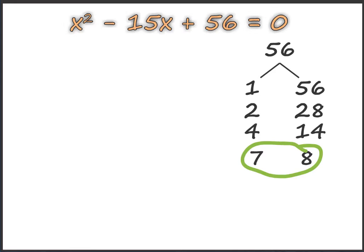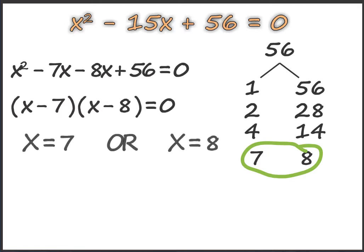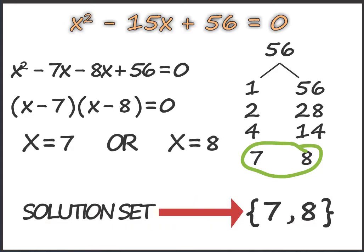We take 7 and 8, because when you add minus 7 and minus 8 we get minus 15. Therefore x minus 7 into x minus 8 equals 0, giving x equals positive 7 or x equals positive 8. Therefore the solution set is {7, 8}.